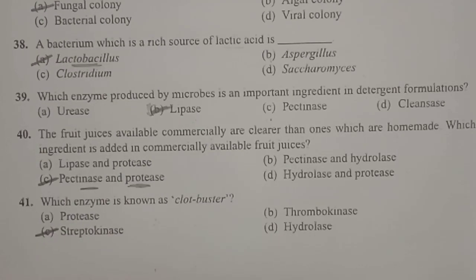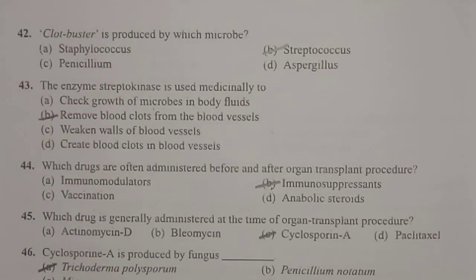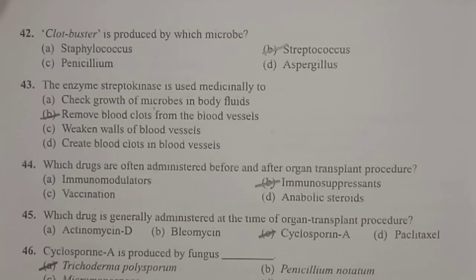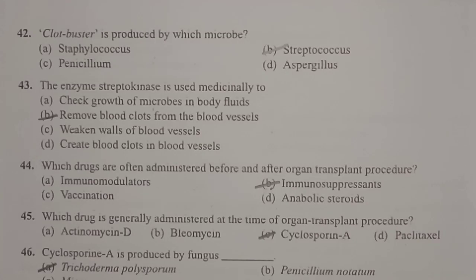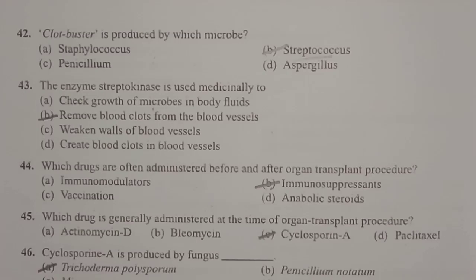Next: which enzyme is known as clot buster? The enzyme known as clot buster is streptokinase. Next: clot buster is produced by which microbe? Streptokinase is produced by Streptococcus. Streptococcus is the microbe which produces the clot buster, the enzyme streptokinase.